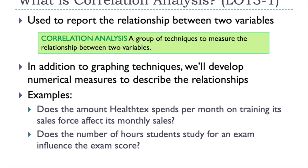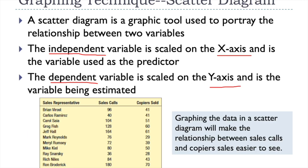Correlation analysis is a group of techniques used to measure the relationship between two variables. We'll first look at some graphing techniques like a scatter plot, then develop more advanced numerical measures. Example questions include: does the amount a company spends per month on sales training affect monthly sales? Or, does the number of hours students study for an exam influence their exam score? Students who want higher grades tend to spend more time studying.